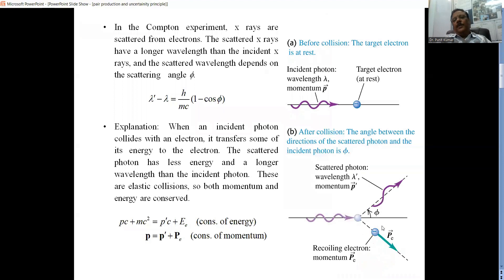It has been observed that the scattered photon has a greater wavelength than the incident. This change in wavelength, where lambda dash is the wavelength of the scattered photon and lambda is the wavelength of the incident photon, this shift is equal to h upon mc into 1 minus cos phi, where phi is the angle of scattering.